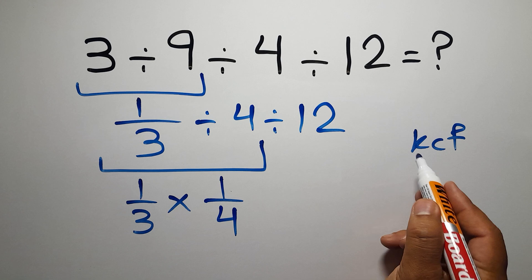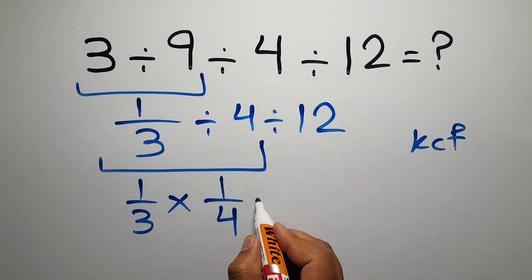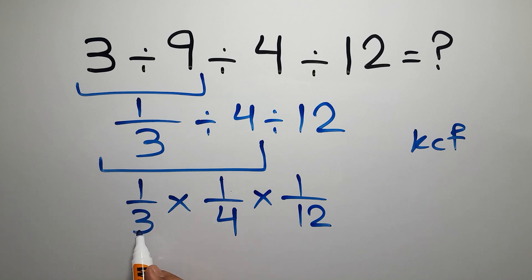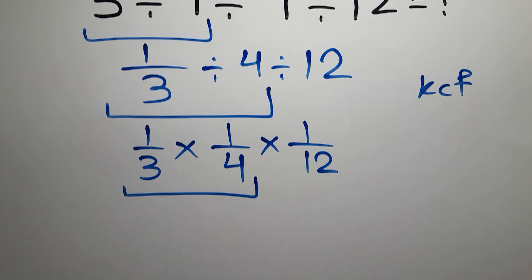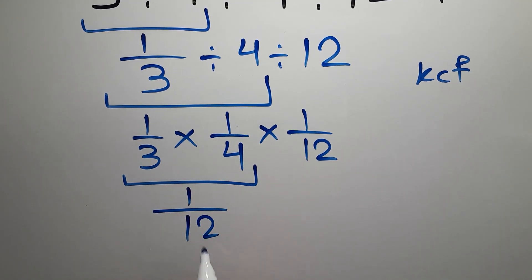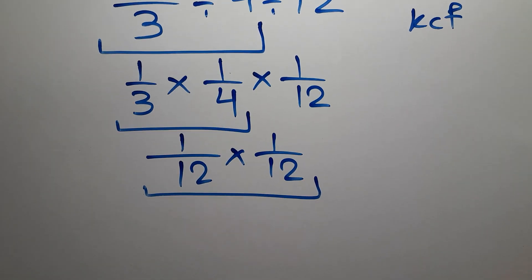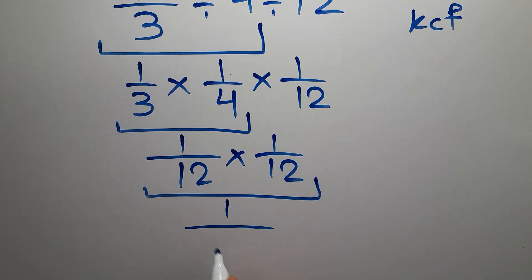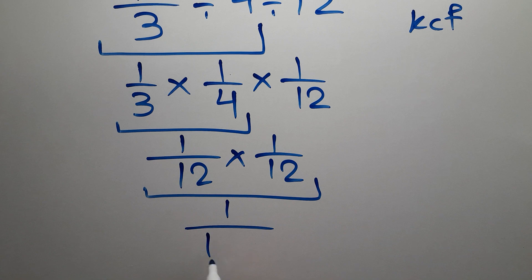Again, we can apply the KCF rule, so times 1 over 12. We have 1 over 3 times 1 over 4, which equals 1 over 12. Then 1 over 12 times 1 over 12, which equals 1 over 144.